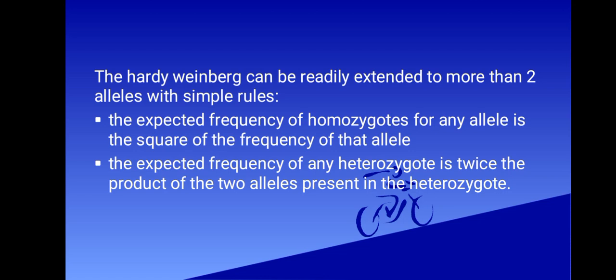The Hardy-Weinberg principle can be readily extended to more than two alleles with two simple rules. The first rule is the expected frequency of homozygotes for any allele is the square of the frequency of that allele. The second rule is the expected frequency of any heterozygote is twice the product of the two alleles present in the heterozygote.